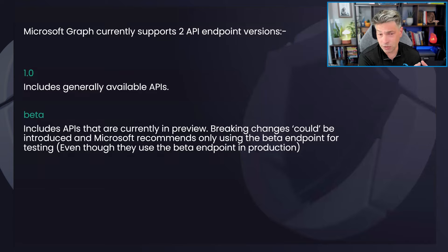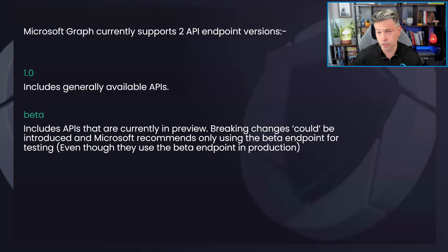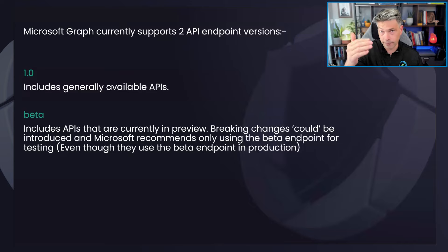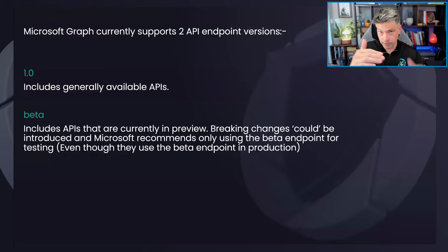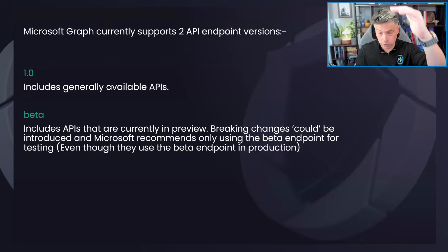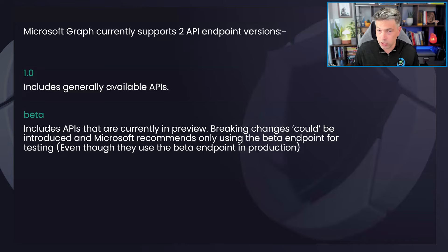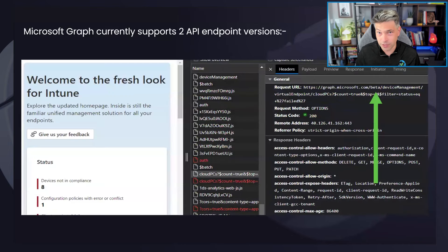The beta endpoint is where Microsoft is testing things — it's a preview endpoint and stuff could change at the last minute. However, you'll find that some really cool, important data is only on the beta endpoint. A typical example: if you GET user information on version 1, you get back a small subset of data; on beta you get a whole lot more. Even though we say be cautious with beta, Microsoft uses it in production themselves.